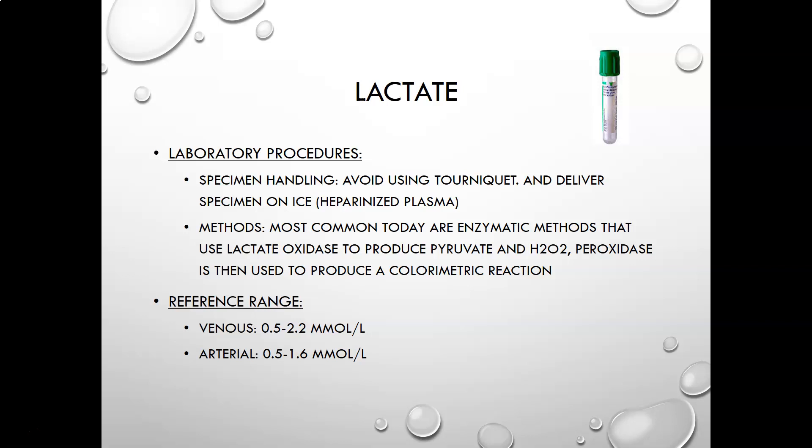For the lab procedure for lactate, specimen handling requires avoiding use of a tourniquet and delivering the specimen on ice, ideally in heparinized plasma. The most common method today uses enzymatic methods with lactate oxidase to produce pyruvate and hydrogen peroxide. A peroxidase enzyme then reacts with the hydrogen peroxide to produce a colorimetric reaction, which is proportional to the amount of lactate in the sample.